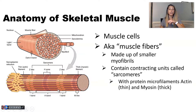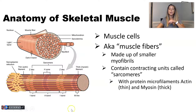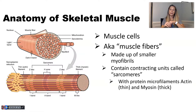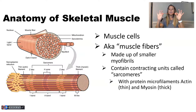The actual unit of contraction is called a sarcomere, and we'll get into sarcomeres when we look at the micro anatomy of a skeletal muscle and how it actually contracts. Even sarcomeres have smaller filaments within the myofibril — thick filaments called myosin, and thin filaments called actin.